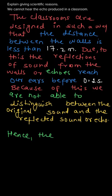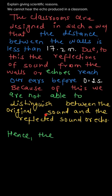If the distance between the walls of the classroom is kept less than 17.2 meters, the reflected sound reaches our ears before this time interval — that is, the persistence of hearing for our ears. In that case, we cannot distinguish between the original and the reflected sound or echo, and hence the echo is not perceived.